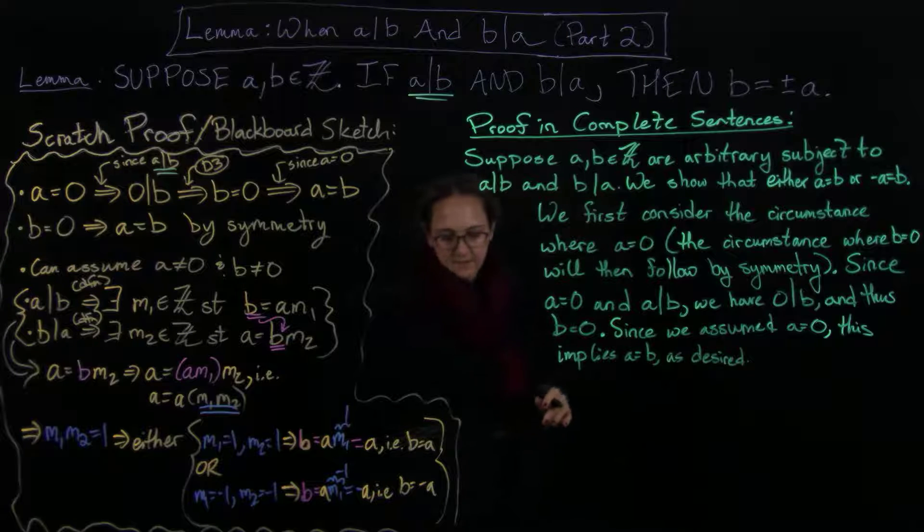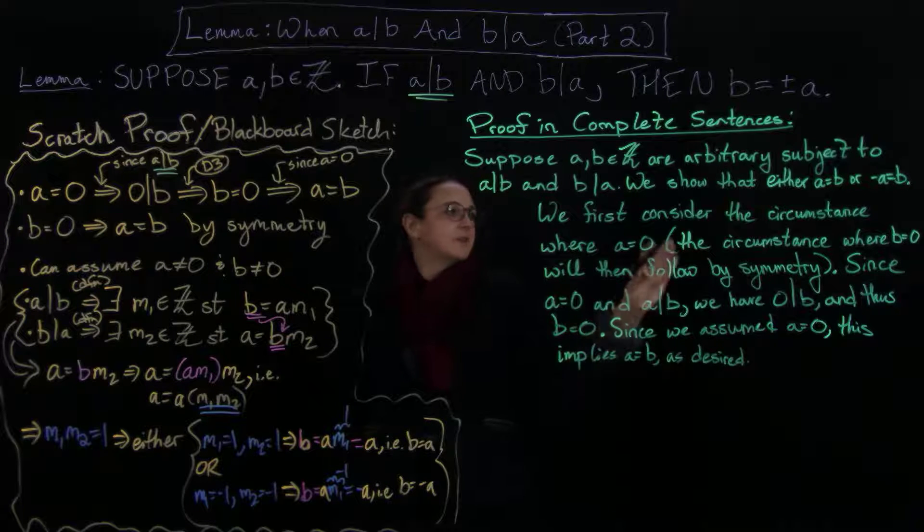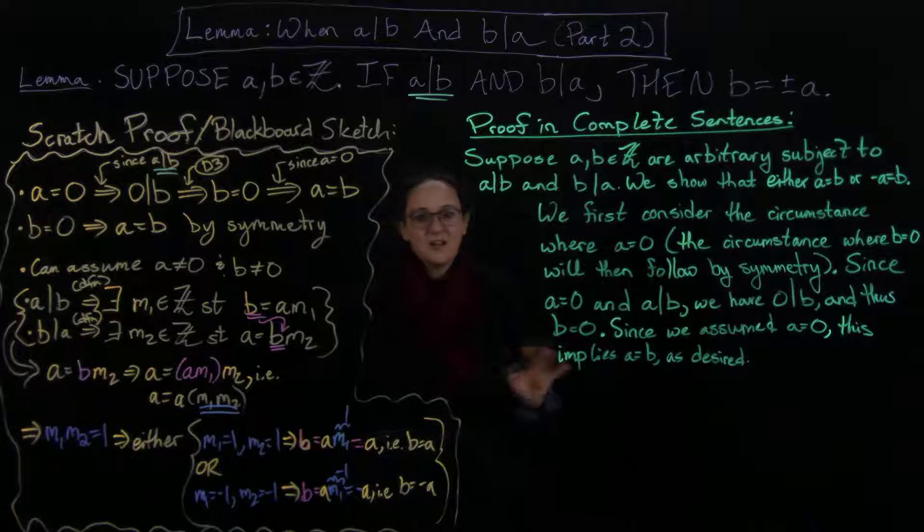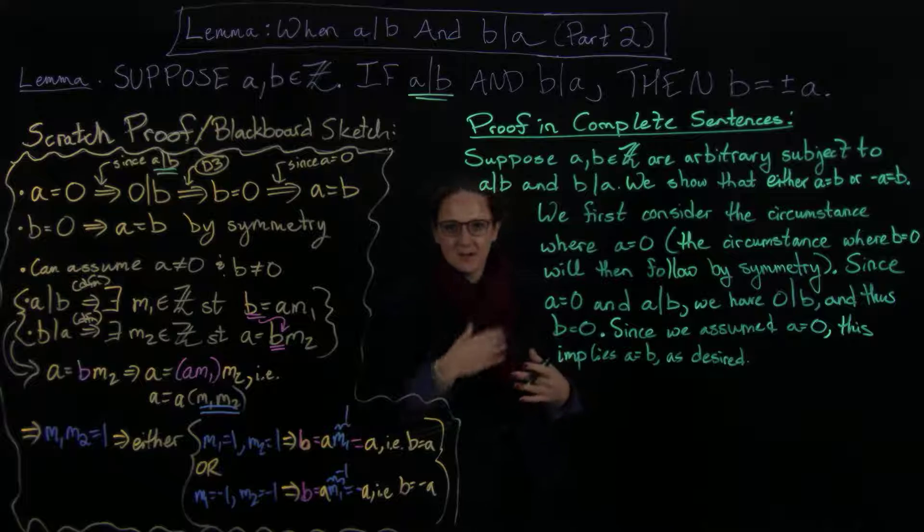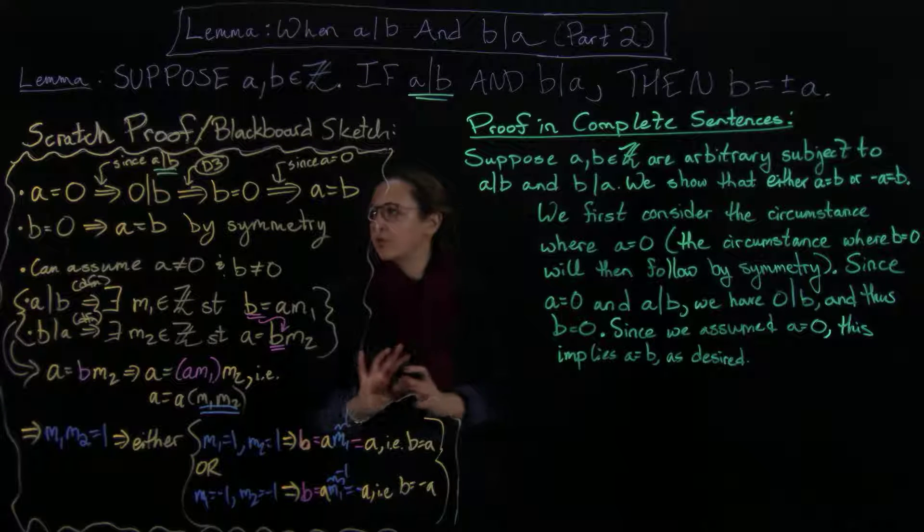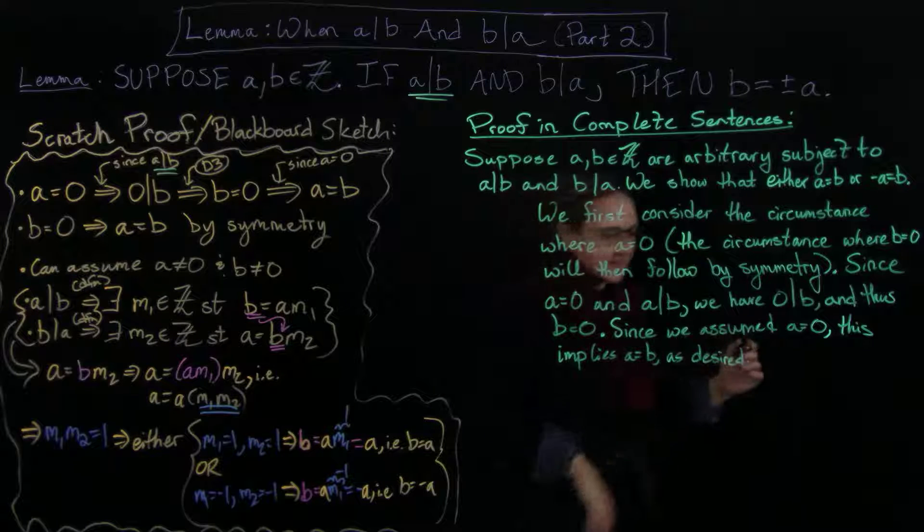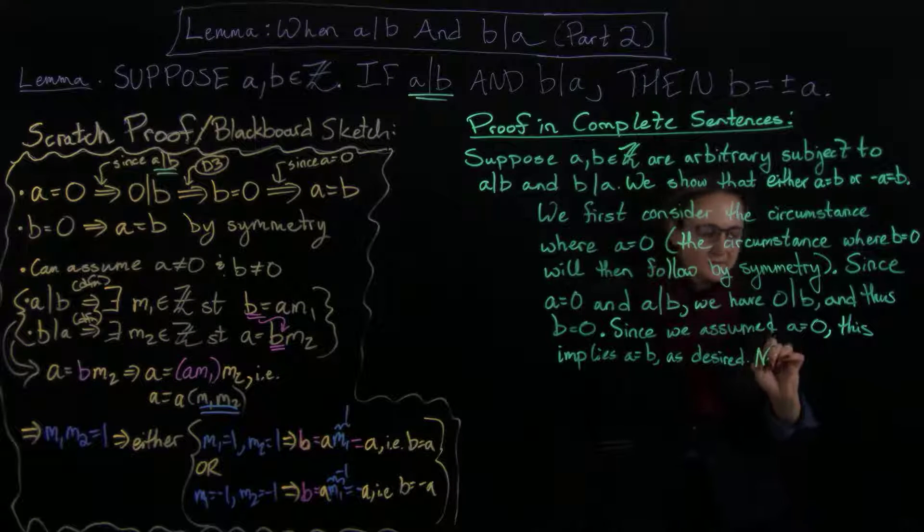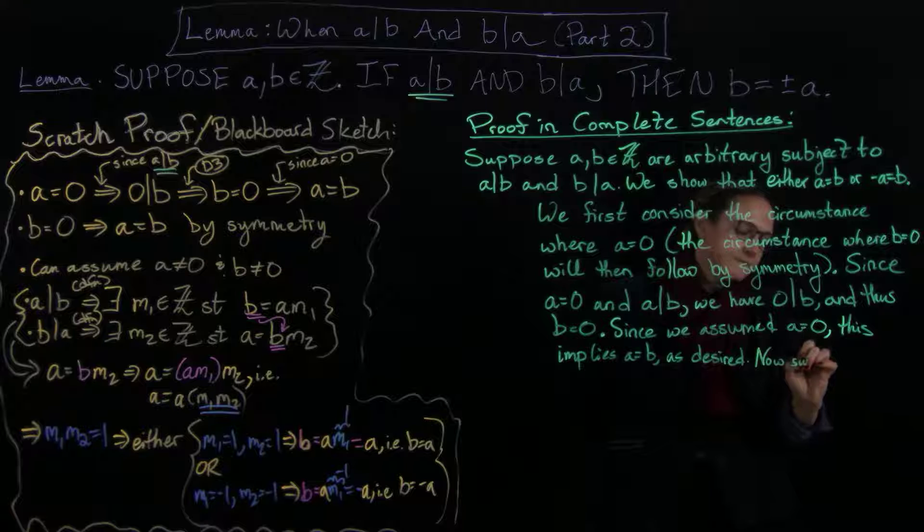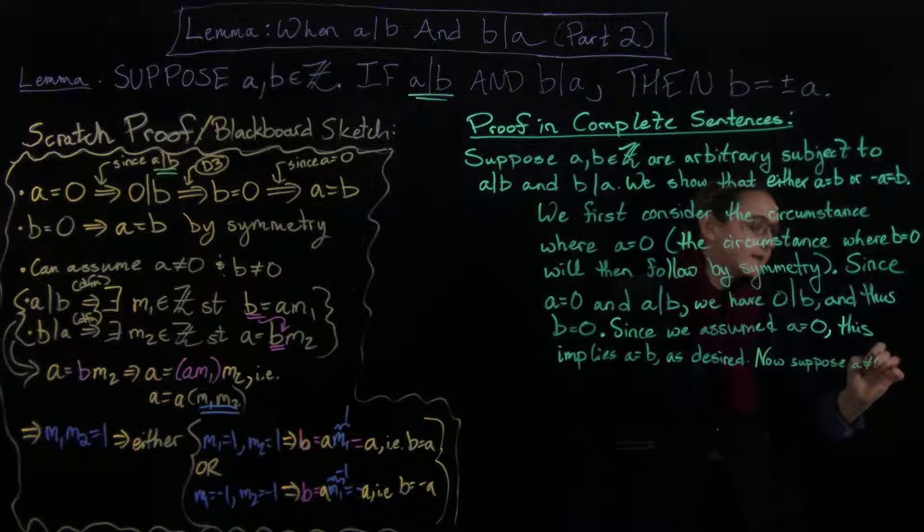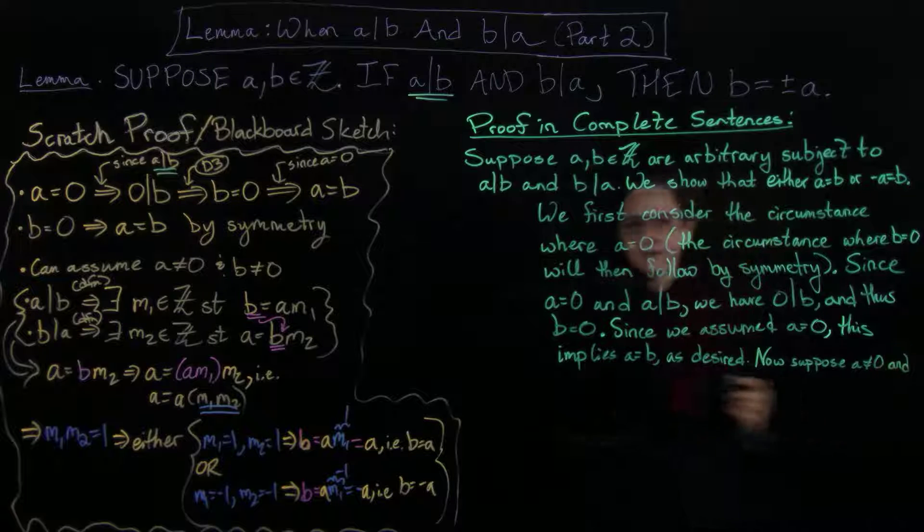Now we don't go through the other one because it's a symmetric circumstance, so we will continue with the rest of the proof, but we can assume that a and b do not equal zero. So now suppose a does not equal zero and b does not equal zero.